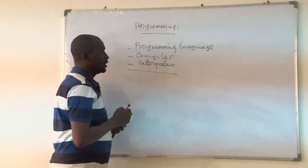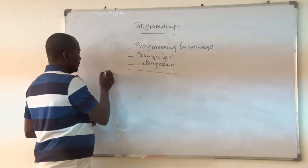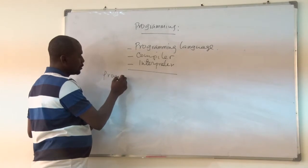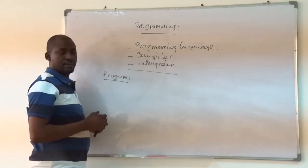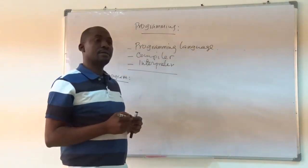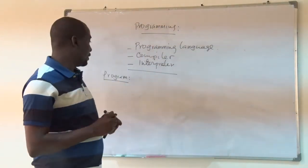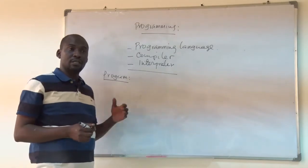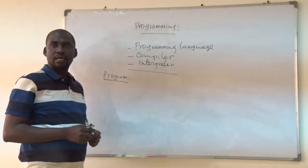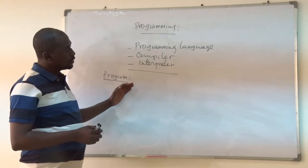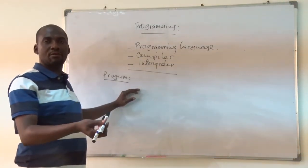As I said before, a program is a set of instructions which tells the computer how to work. And programming is the process of creating a program, which means it is the process of creating this set of instructions which tells the computer how to work.